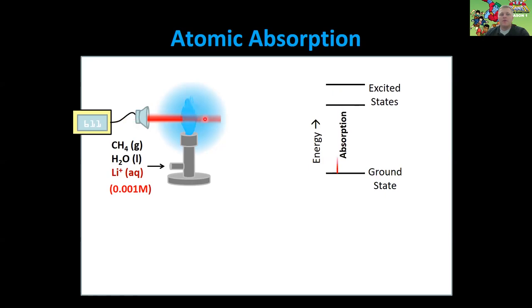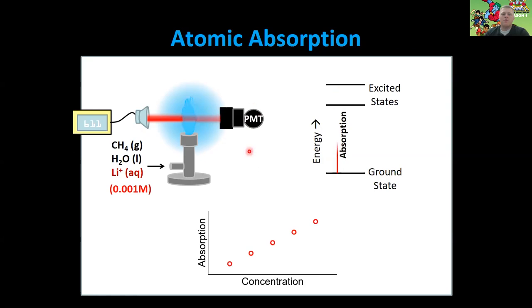From Chem 105 and 106, you can only absorb light that has an energy equal to the difference in energy between two states. So we have to choose a wavelength that lithium is going to absorb, and then it's going to absorb some amount of our laser light. On the other side of this flame we'll put a photomultiplier tube to detect our signal, and we can compare absorption to concentration. Just like with UV-Vis spectroscopy, in atomic absorption spectroscopy the absorption and concentration have a linear relationship, so we can make a calibration curve and determine concentrations of unknowns.